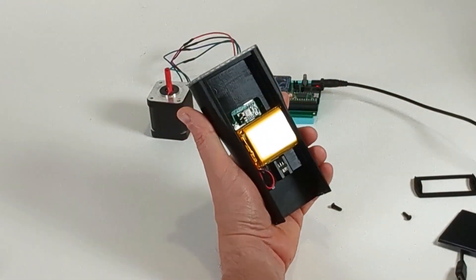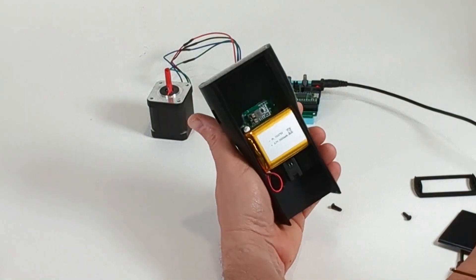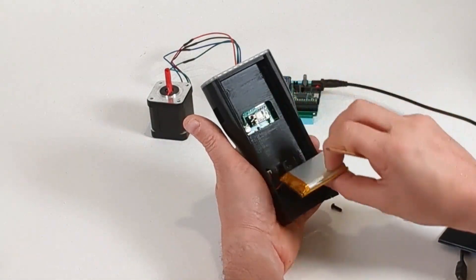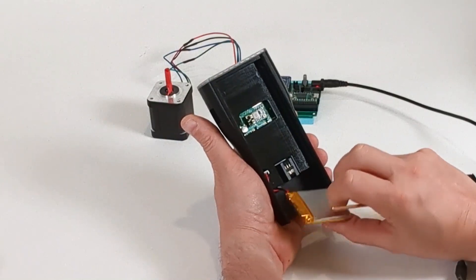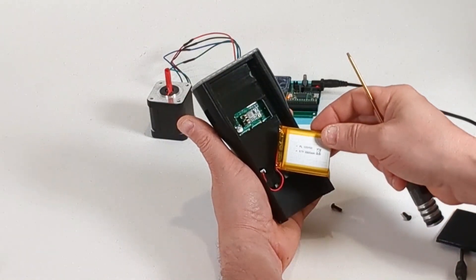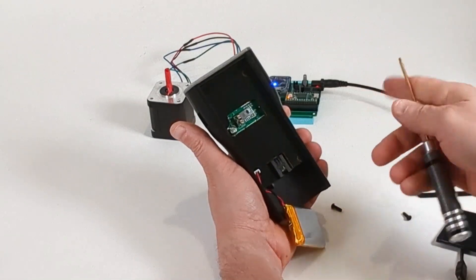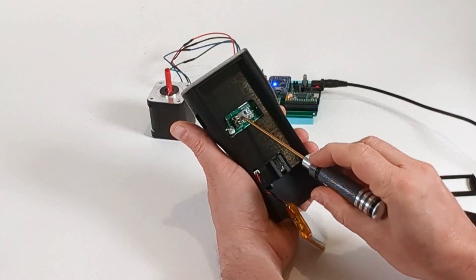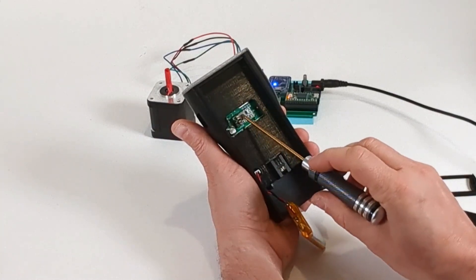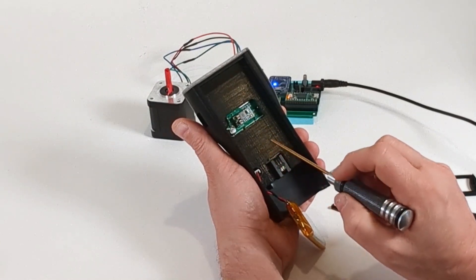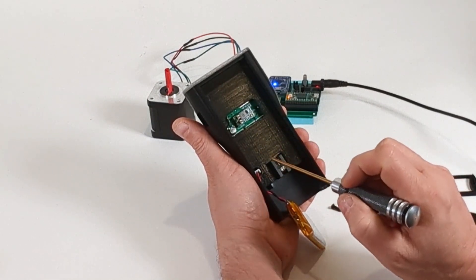So a quick look inside. This is just a 2,000 milliamp hour lithium polymer battery. LiPo. You can see space is tight. This is a buck converter to go from what's being input 5 volts down to 3.3 volts for various things on the board.